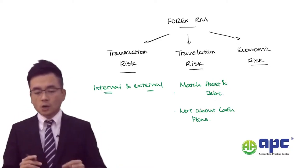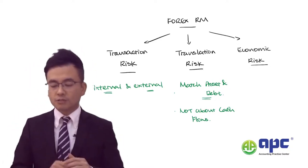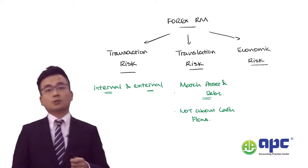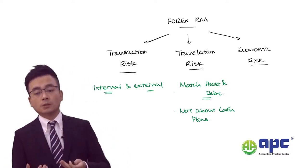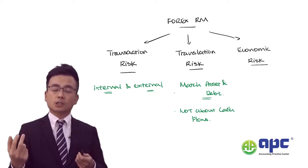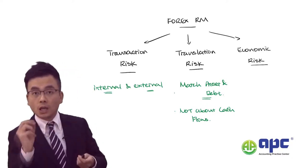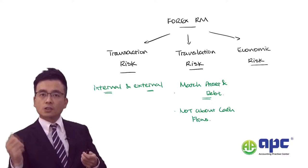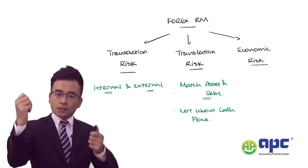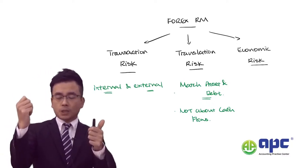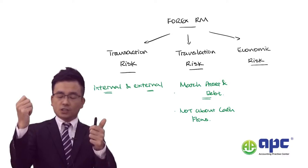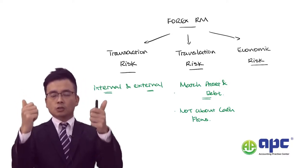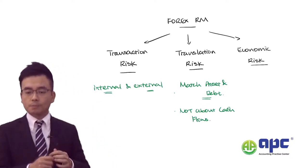One way to manage translation risk is that if we operate in a foreign country, we also borrow in that foreign country. We increase the debt denominated in foreign currency while having property, plant and equipment such as land and buildings denominated in foreign currency — matching them all together.